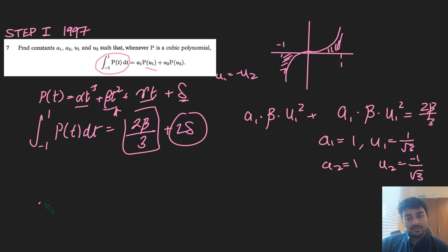And so therefore, the integral from minus 1 to 1 of p(t) dt will always equal 1 times p(1 over root 3) plus 1 times p(minus 1 over root 3), like so.